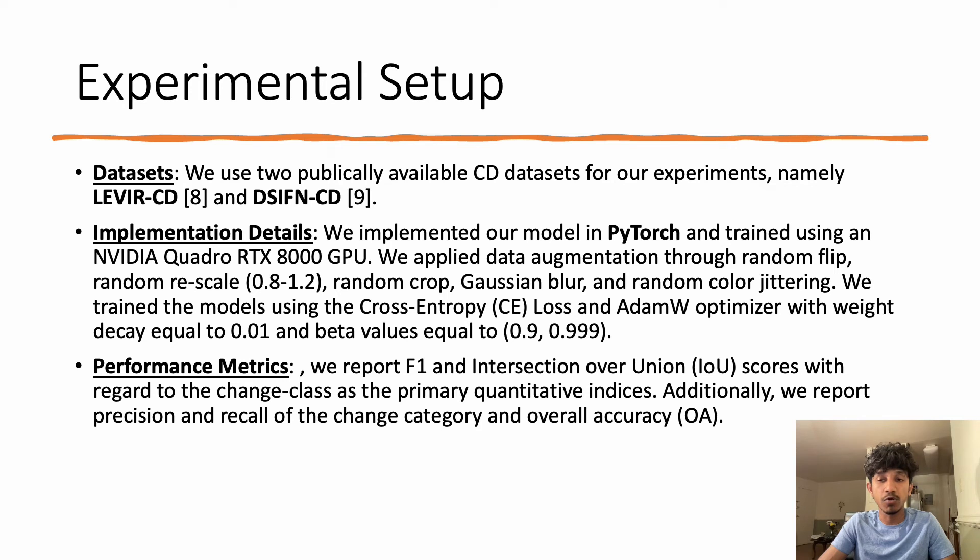During training, we applied data augmentations through random flip, random rescale, random crop, random blur, and random color jittering. We trained the model using cross-entropy loss and AdamW optimizer with weight decay equal to 0.01 and beta values equal to 0.99 and 0.999. The learning rate is initially set to 0.0001 and linearly decays to 0 until trained for 200 epochs.